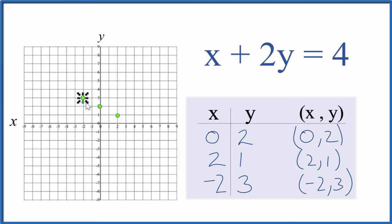And then we have negative 2 for x and 3. 1, 2, 3 for y. So you can see our line here. Let's put a line through that. Then we'll put arrows to show it goes to infinity. And we've graphed the equation x plus 2y equals 4.